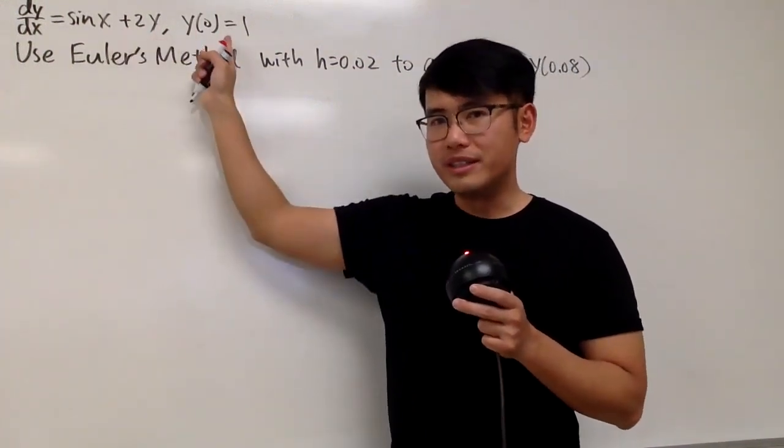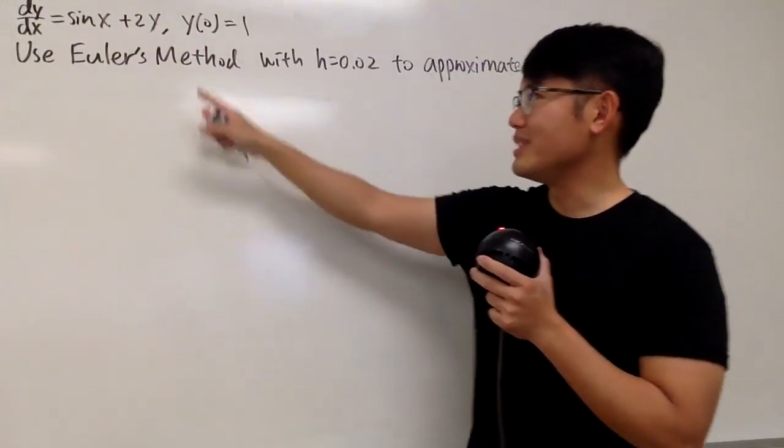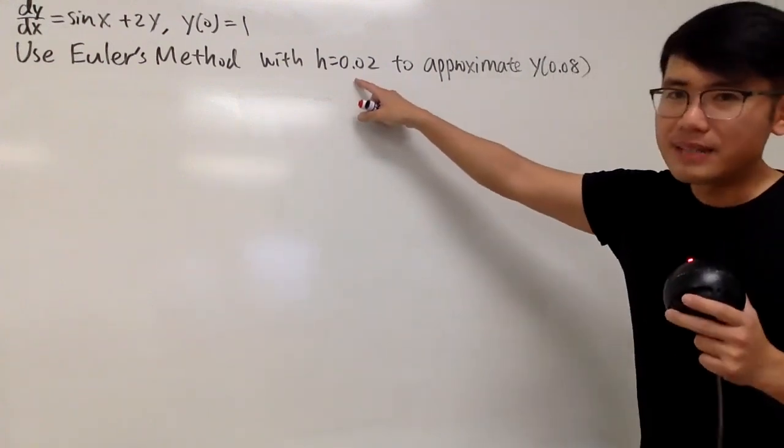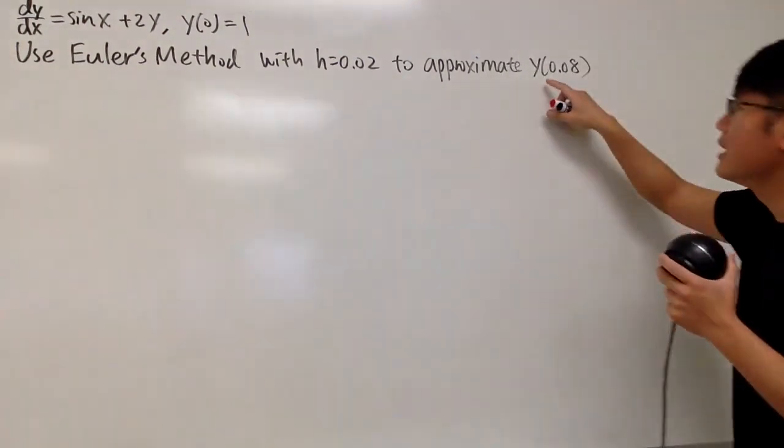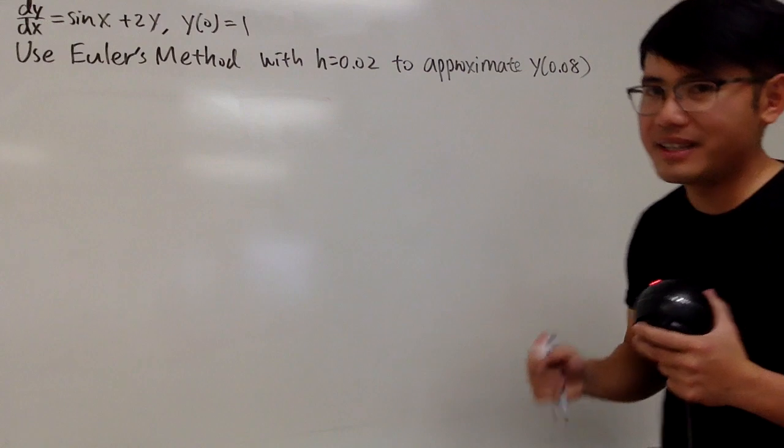Okay, we are given this differential equation with this initial condition, and we are going to use Euler's method with step size 0.02 to approximate y of 0.08. And now, here we go.